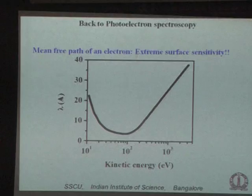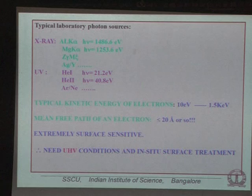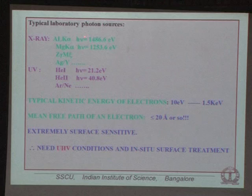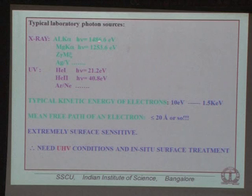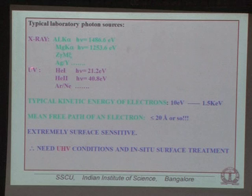It depends on knowing the limitations and how to use the technique properly. Traditionally, the common photon sources were characteristic X-ray emissions — most common was aluminium K-alpha at 1.5 keV energy. Magnesium and calcium K-alpha were also used extensively, as well as zirconium, silver, and yttrium. For low energy work, UV lights — helium-1 and helium-2 resonance lines — are used, and some people also use argon ion systems, but these two are the most commonly used.